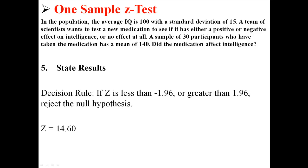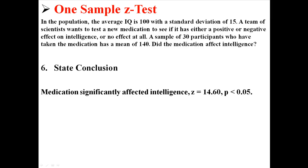Step five is to state our results. Our decision rule was: if z is less than negative 1.96 or greater than 1.96, we reject the null hypothesis. Our z was 14.60, which is definitely greater than 1.96, so we reject H0. By rejecting the null hypothesis, we're saying the alternative is true — that there is a difference, and the sample mean is not the 100 it was expected to be. As for our conclusion, we can say that intelligence was significantly affected by medication. The official notation is z = 14.60, p < 0.05. The result was to reject H0, and the conclusion is that intelligence was significantly affected by medication.